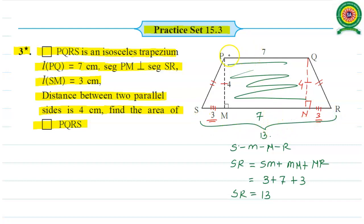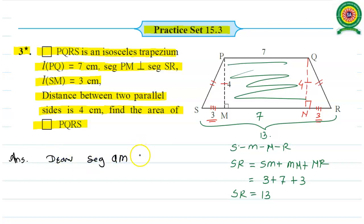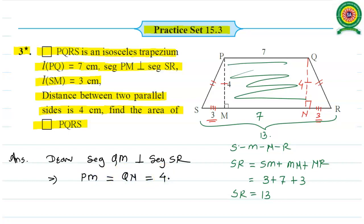So SR value is 13 units, and whose parallel side PQ is 7 units. So 13 plus 7 is 20, and into height divided by 2. PM equals QN, and both are equal to 4 units — the given distance between parallel lines is 4 units. The unit is centimetre.